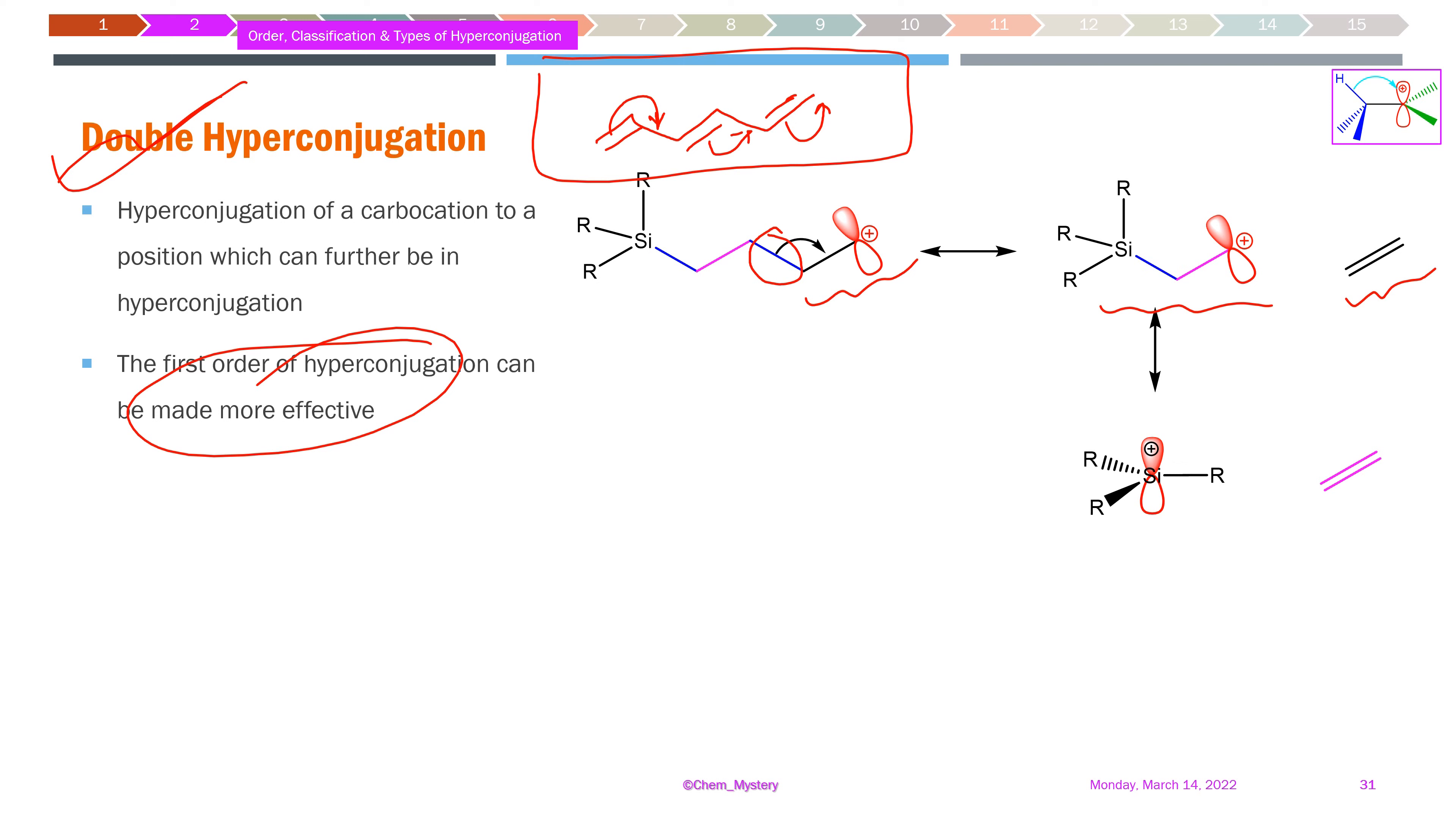This second hyperconjugation drives the first hyperconjugation process. The first hyperconjugation from the carbon-carbon bond would otherwise be unlikely to occur, or would have a much smaller effect than normal alpha carbon-hydrogen hyperconjugation.